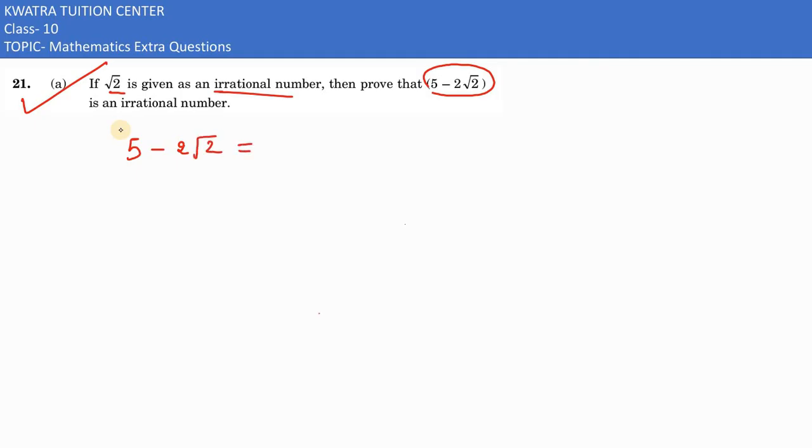And what does it mean? It would be equal to a over b, and what do we assume here? That a and b are nothing but co-prime numbers. We assume that they are co-prime numbers.